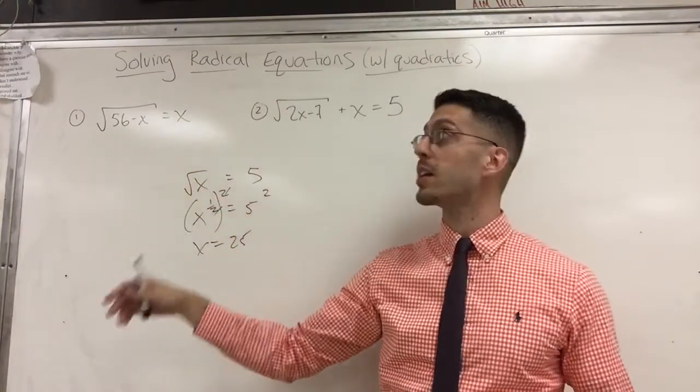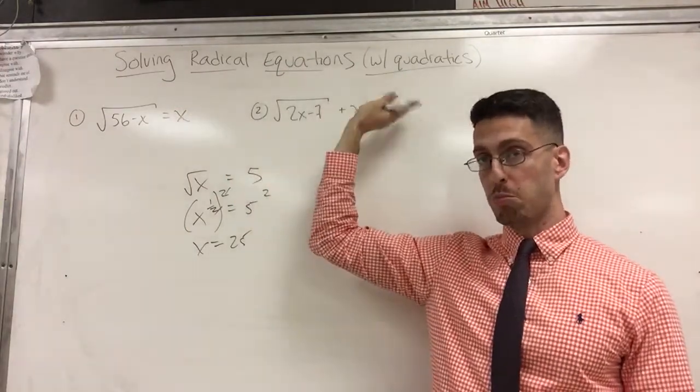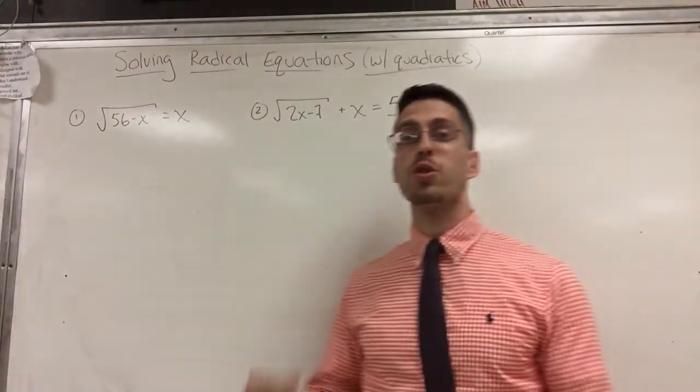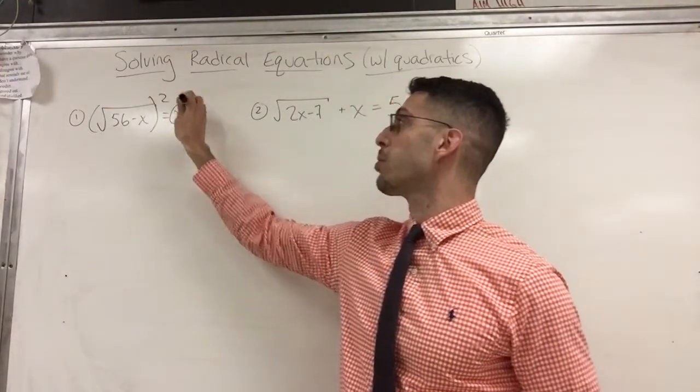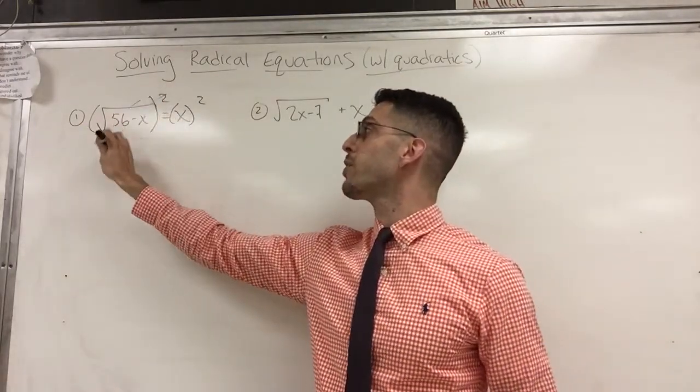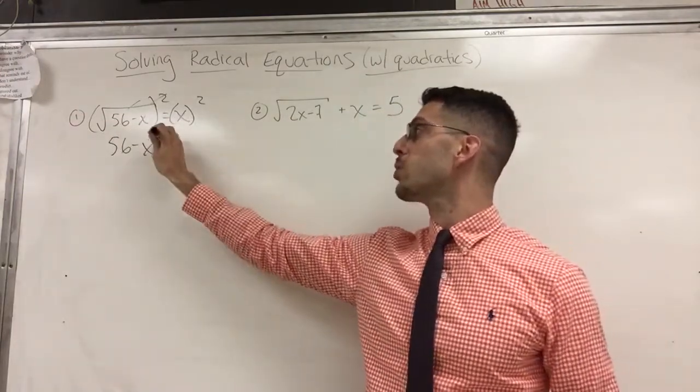So here, the radical's already isolated for you. If you want to see some examples where it's not isolated, check the other video, the one that just says solving radical equations without quadratics, and you'll see how to isolate the radical. So since it's already isolated, I'm ready for step two, which is to square both sides. So I'll do that, just to make it obvious I'm putting both sides in parentheses, although that's not necessary here. When I square a square root, the 56 minus x, that's the radicand, comes out, and equals x squared.